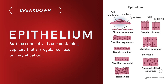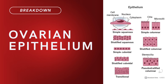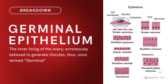Compound term: epithelium. Brief definition: surface connected tissue containing capillaries — that's an irregular surface on magnification. Related terms: ovarian epithelium and germinal epithelium. Brief definition: the inner lining of the ovary, erroneously believed to generate oocytes — thus the term 'germinal.'